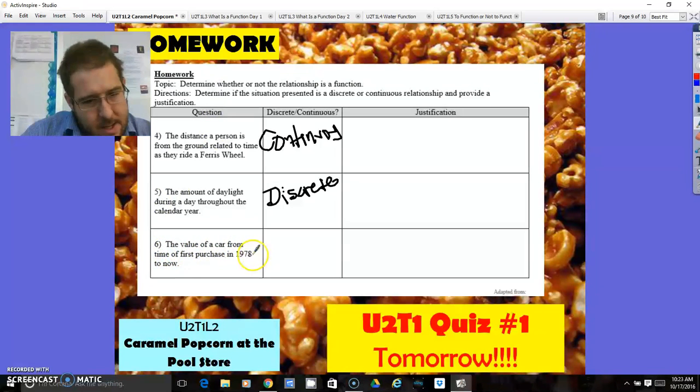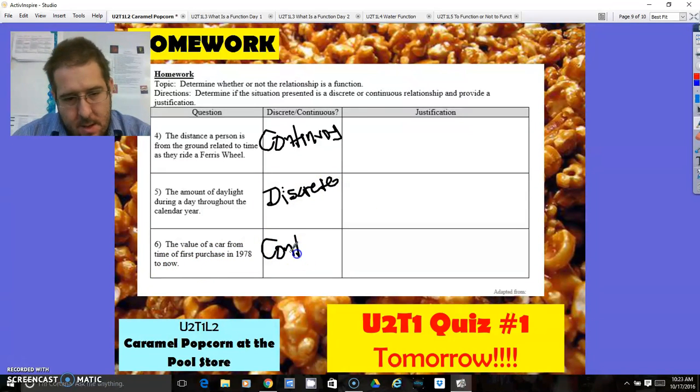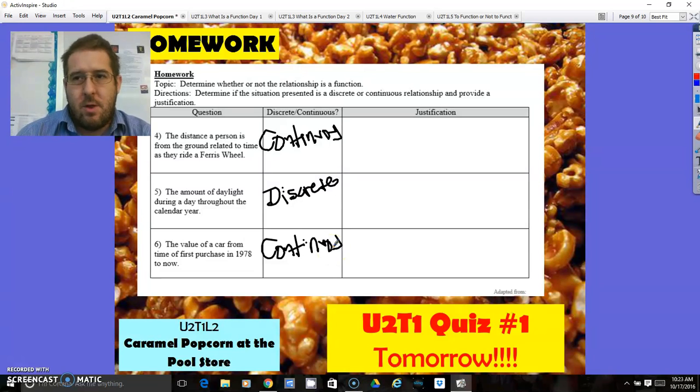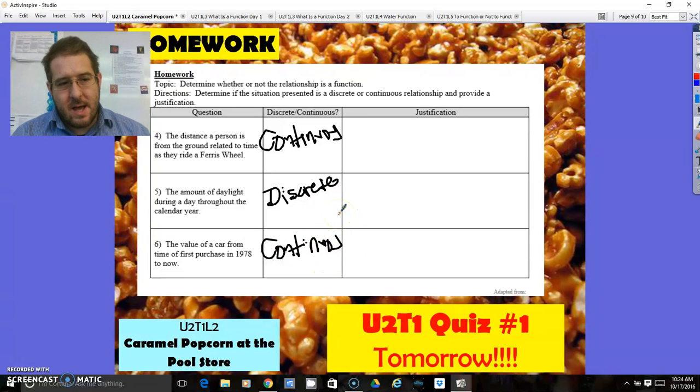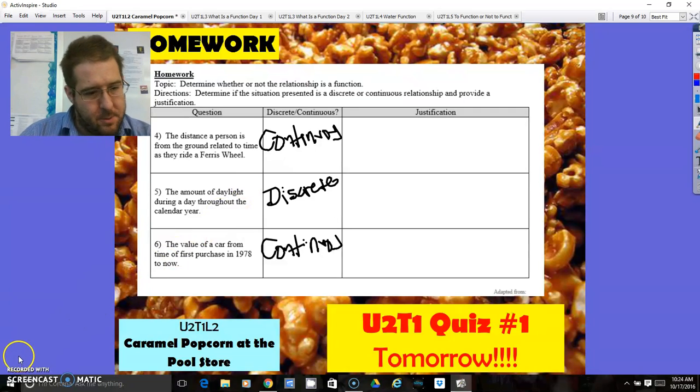The value of a car from the time of first purchase in 1978 to now. A car always has value. So this is definitely continuous. Almost all cars decrease in value, unless they're really old and they're a collector's item. But they're going to decrease a certain amount all the time. There's never a time where it's not going to have any amount of value. Because that's really what discrete versus continuous is. As long as the independent variable is something that could always be measured, then it's continuous. If it's not something that always has a measurement, doesn't always have a dependent answer, there's no in-between, then it's discrete. All right. Thanks again for watching once again. And I hope I helped you.